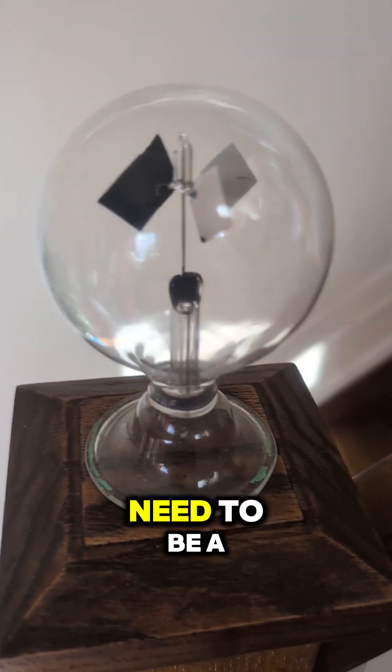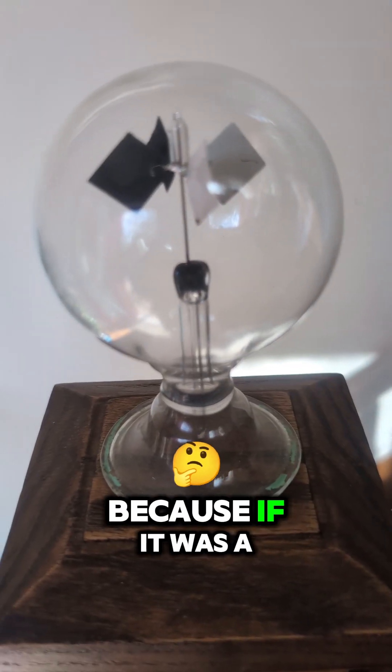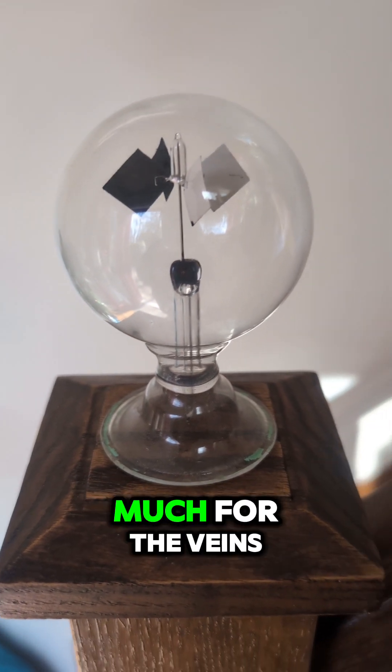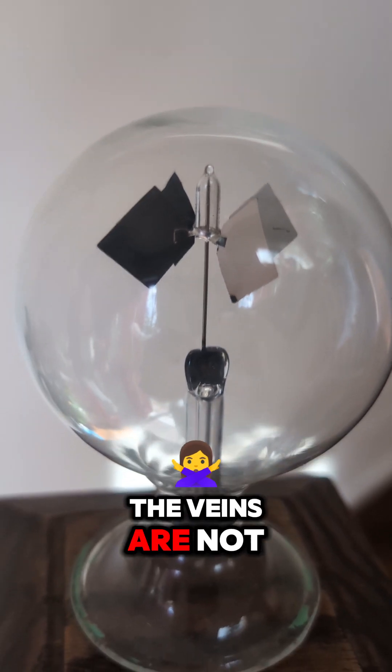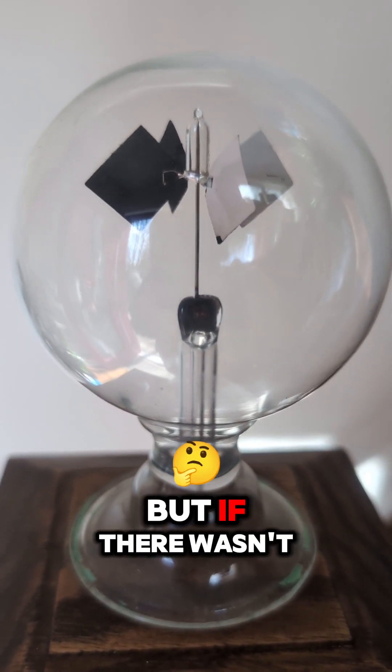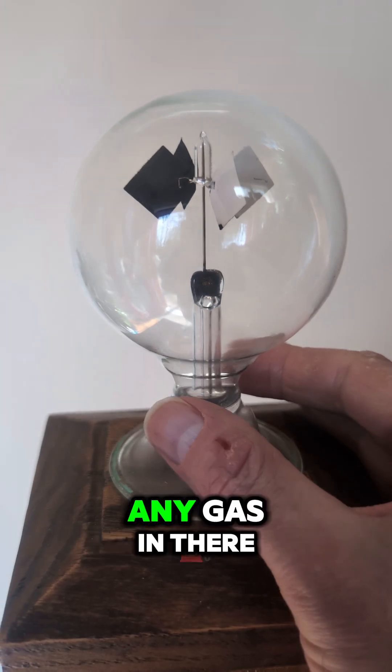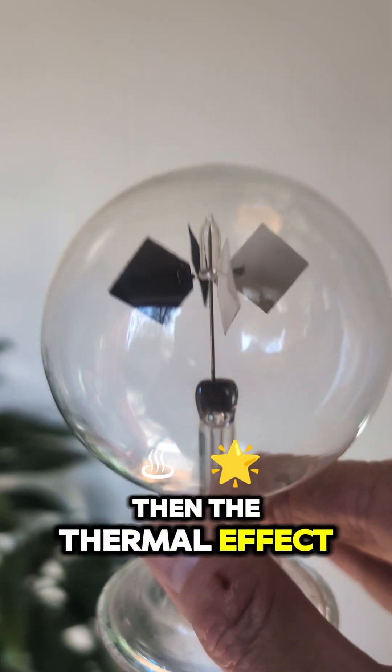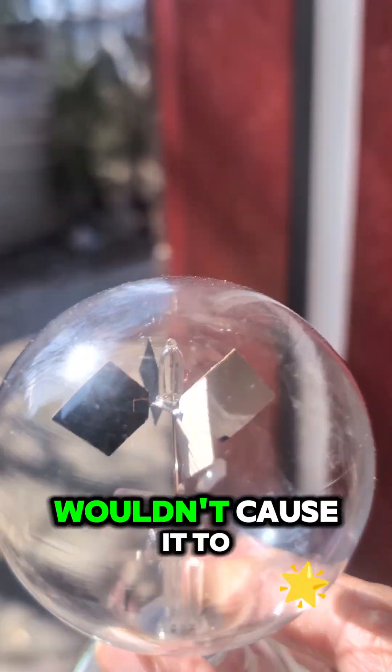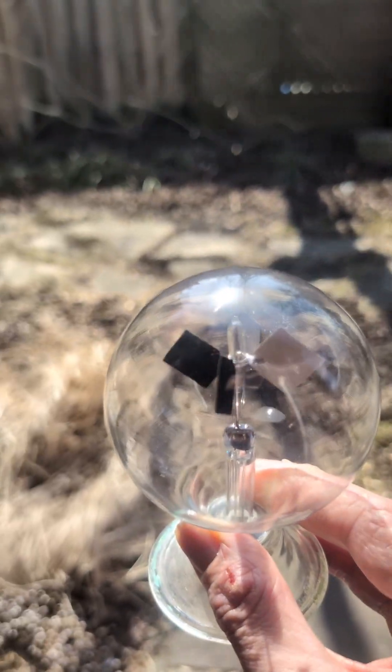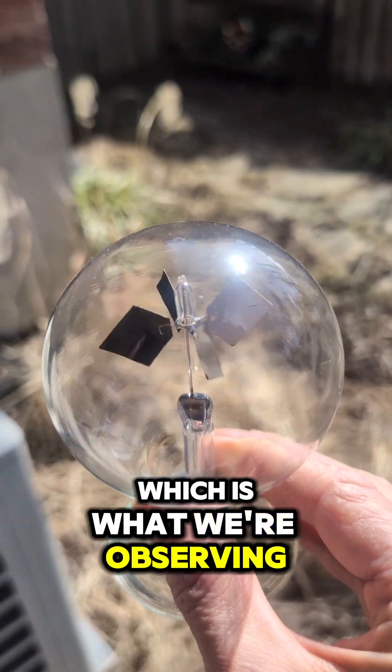Now, why does it need to be a partial vacuum? Because it needs the right amount of gas - not too much, not too little - for the vanes to spin. As you can see, the vanes are not affected by the wind around them. But if there wasn't any gas in there, then the thermal effect wouldn't cause it to spin when it goes into the sunlight, which is what we're observing right now.